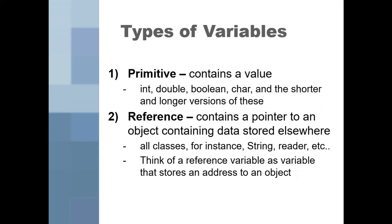When we make keyboard reader, we always name him 'reader' — that would be his identity. Now there are different types of variables. Primitive is just containing a value — those are like your int, your double, your boolean, char, and the shorter and longer versions of these.